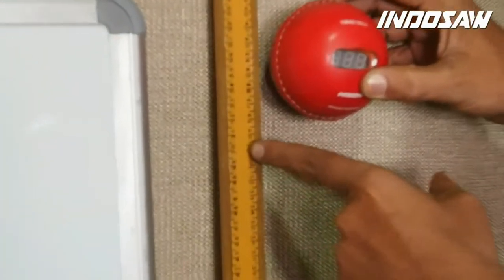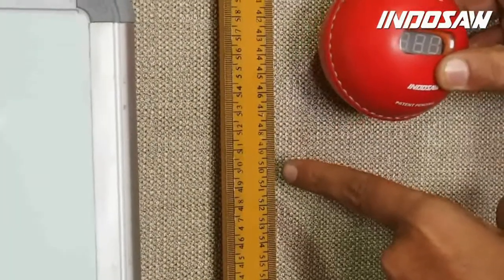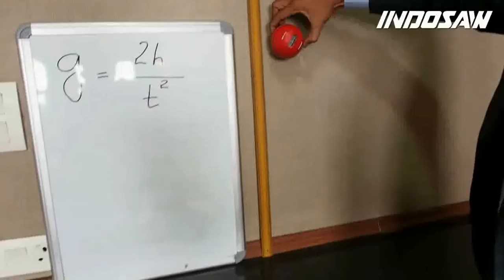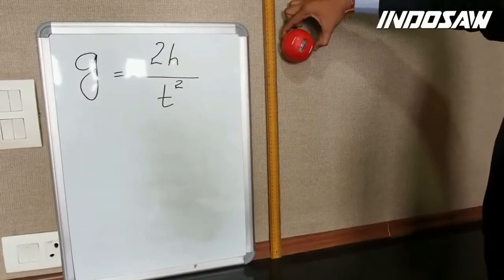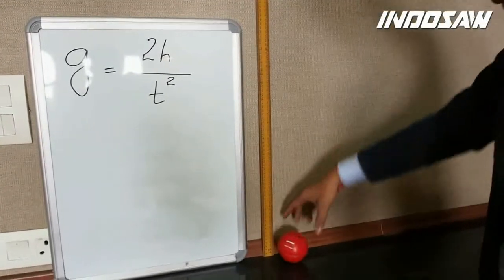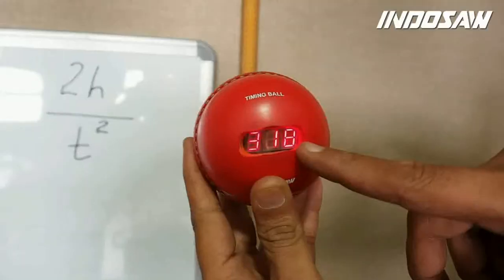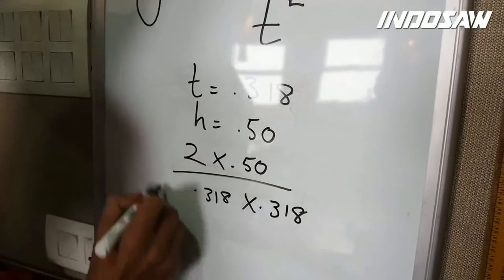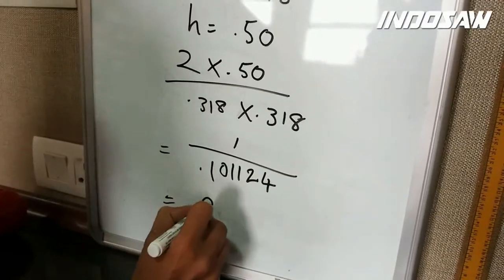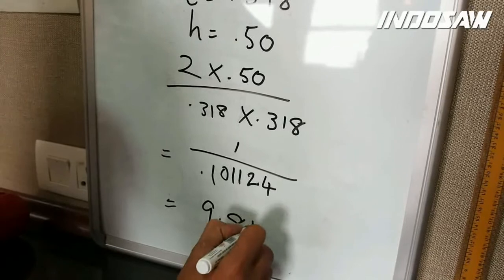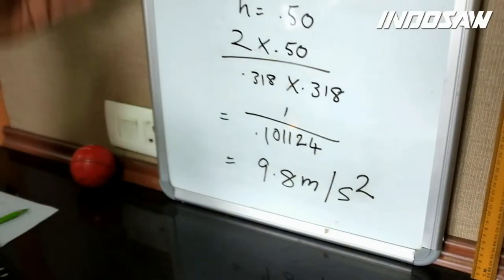Let me drop the ball from a certain height h, say 50 centimeters. I am going to keep the ball right above the mark at 50 centimeters or 0.5 meters on the ruler and record the time of flight t from the ball. Putting the value of h = 0.5 meters and t = 0.318 seconds, we get the ideal value of g, that is 9.8 meters per second squared. Such a simple experimental setup to find the value of g by free fall.